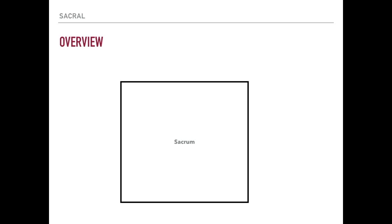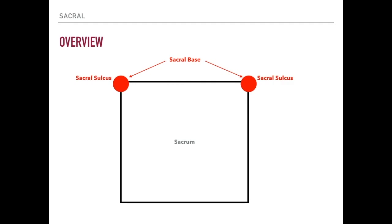Here's an overview of the sacrum. We're going to talk about the different ways that osteopathic physicians refer to the sacrum and all of its little tiny parts. At the top of the sacrum we have the sacral base, and there's a sacral base on either side. You see drawn in red here, I'm labeling what's referred to as the sacral sulcus.